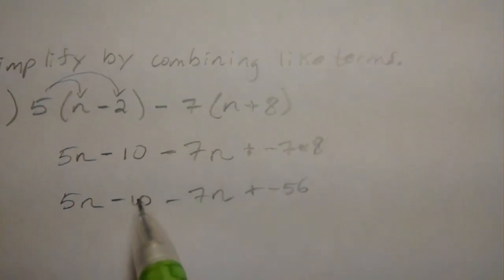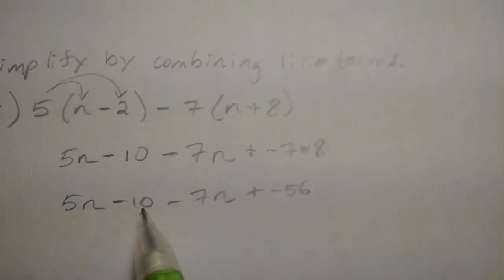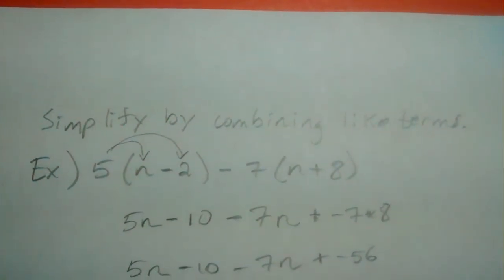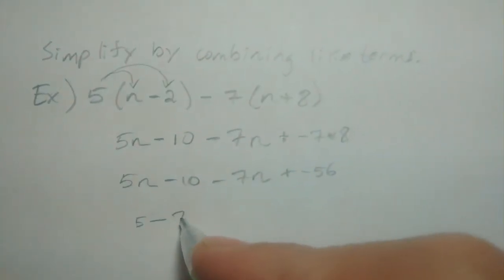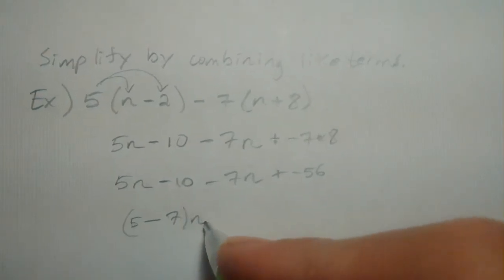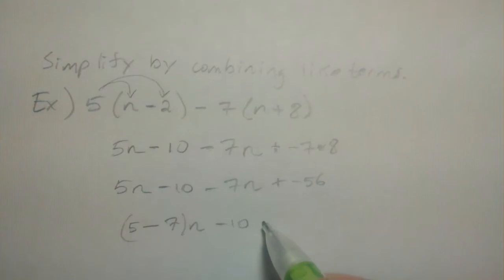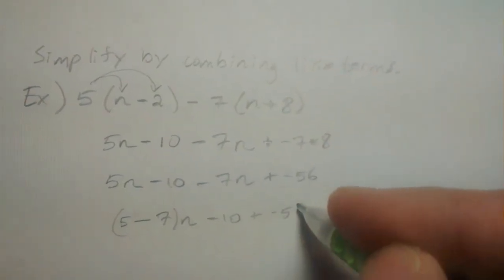This n is a like term with this. So we're going to perform that operation with the 5 and the 7. So in your mind you should do this: 5 minus 7 n's are occurring, and subtract 10 and add negative 56.